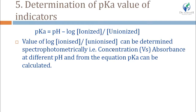Fifth application — determination of dissociation constant of indicators: using the Henderson-Hasselbalch equation, pKa = pH − log([ionized form]/[unionized form]). The concentrations of ionized and unionized forms can be determined using colorimetry, by plotting concentration versus absorbance at different pH values, and using this equation to calculate the dissociation constant.